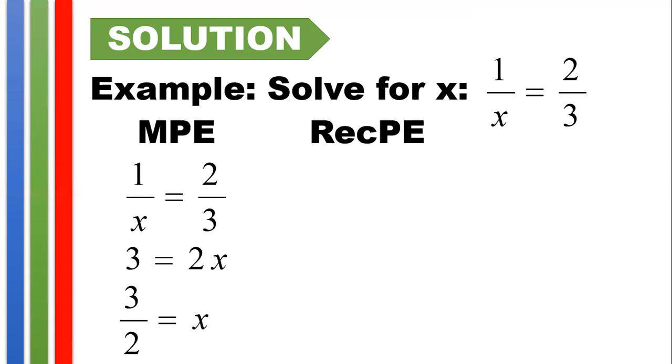Now, if we are going to use the reciprocal property of equality, given this equation, we will take the reciprocal of both sides of the equation. The reciprocal of 1 over x is x, and the reciprocal of 2 thirds could be achieved by interchanging your numerator and denominator, and its reciprocal is 3 halves. So x equals 3 halves. And you could notice that using either MPE or the reciprocal property of equality, you still achieve the same answer.